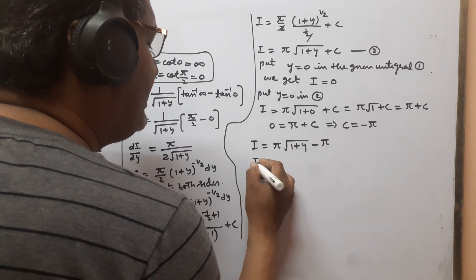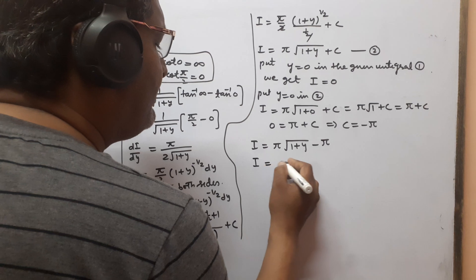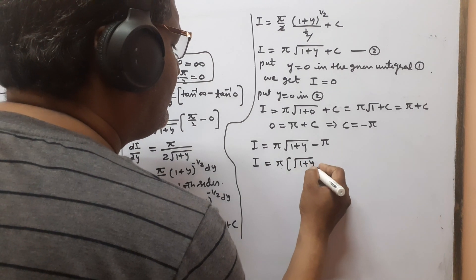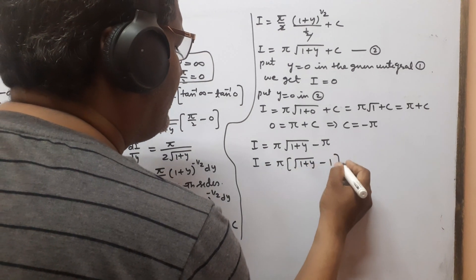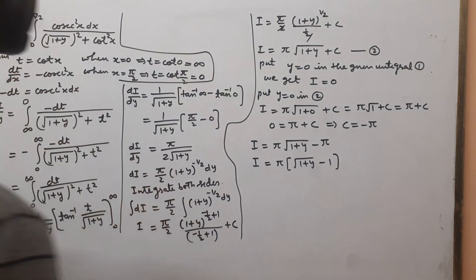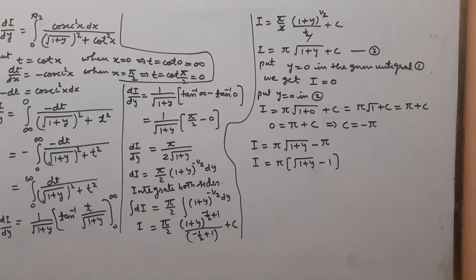Taking π common: I = π(√(1+y) − 1). This is the solution of the given integral. Thank you.